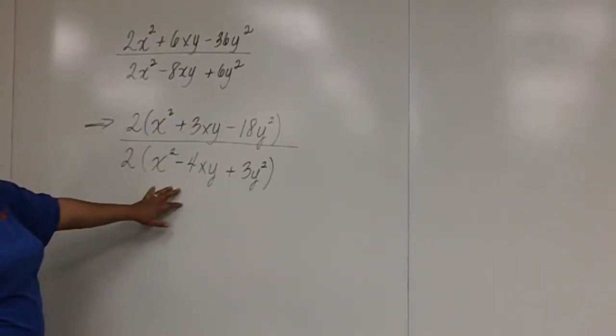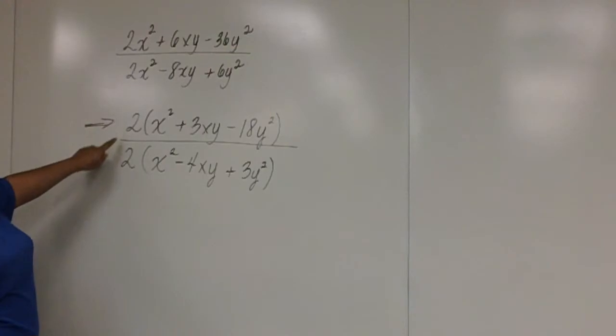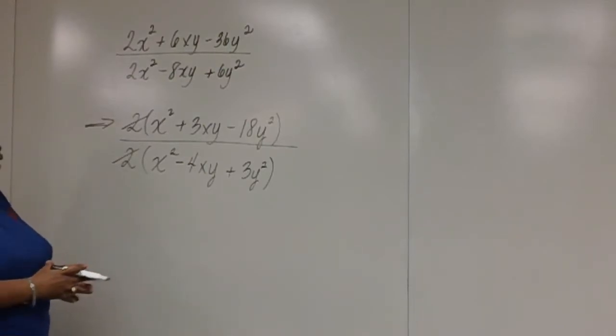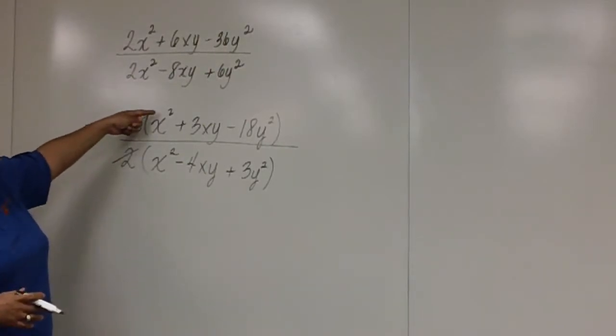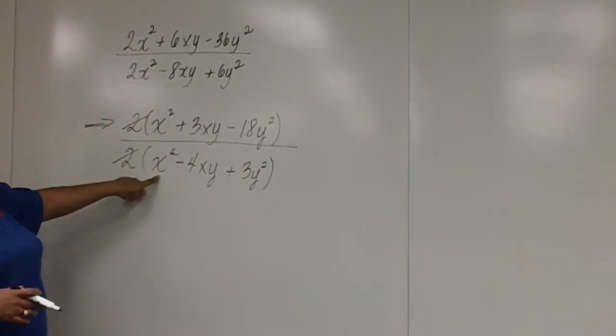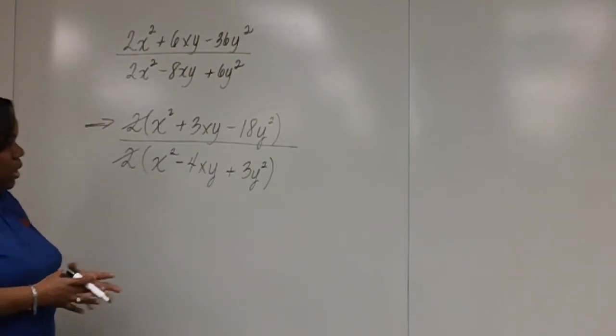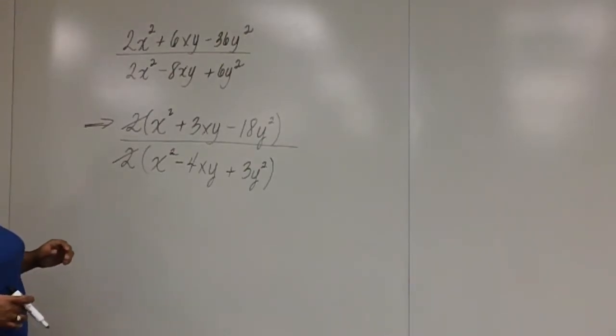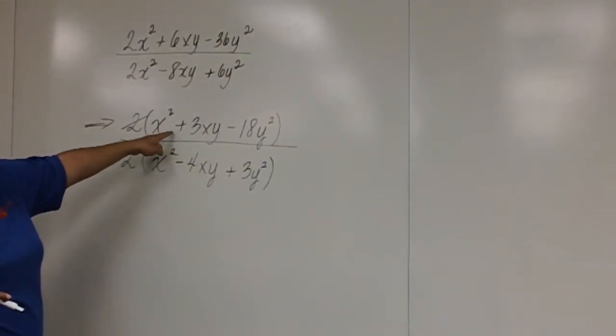But we aren't done factoring. Notice that we can go ahead and cancel the 2s. Some of you are probably saying, can I cancel this x squared with this x squared? No, you cannot. This has not been factored yet. So the first thing we're going to do is factor the numerator.